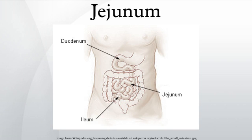Function: The lining of the geodunum is specialized for the absorption by enterocytes of small nutrient particles which have been previously digested by enzymes in the duodenum. Once absorbed, nutrients pass from the enterocytes into the entero-hepatic circulation and into the liver via the hepatic portal vein, where the blood is processed. The geodunum is also involved in magnesium absorption.